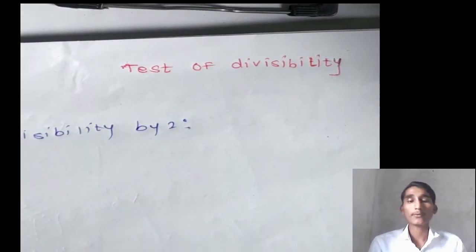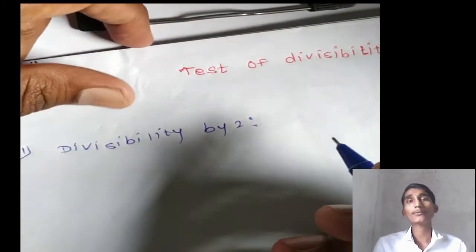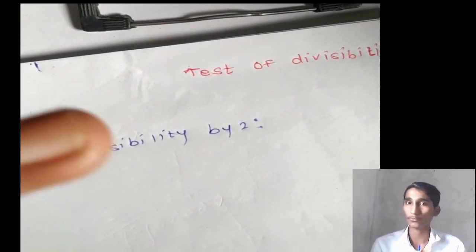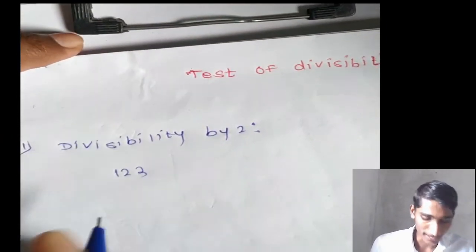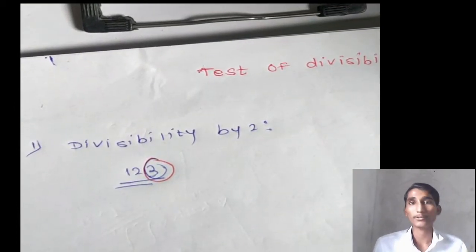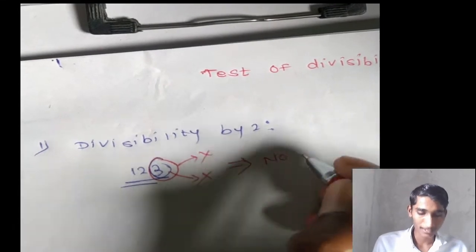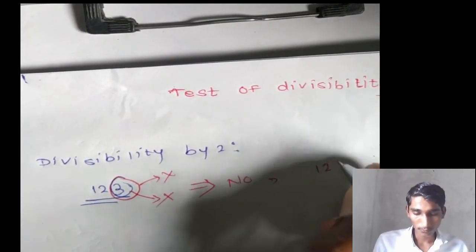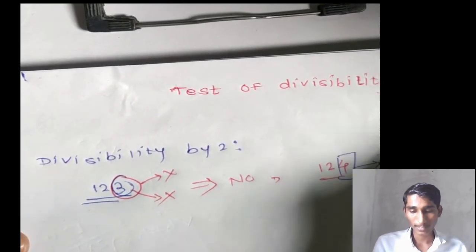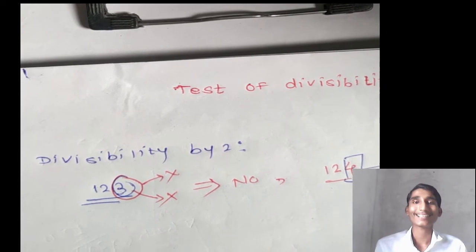When will a number be divisible by 2? The number will be divisible by 2 when the unit's place digit is either zero or divisible by 2. For example, the number 123 — the unit place is 3. Is it divisible by 2? No. Is it zero? No. So 123 is not divisible by 2. Now take 124 — the unit place is 4. Is it divisible by 2? Yes. When we divide 124 by 2, the remainder is zero, so the number is divisible by 2. How simple is divisibility by 2!